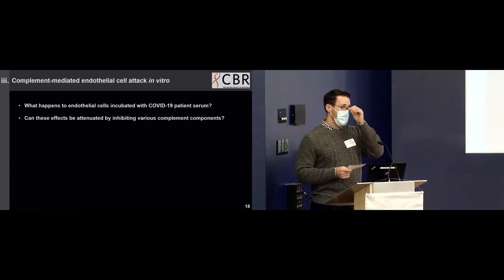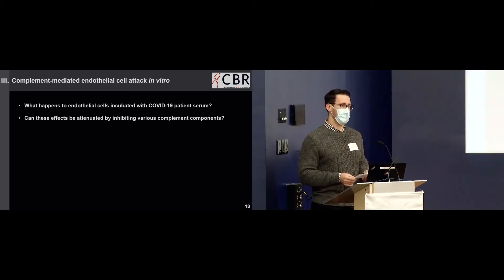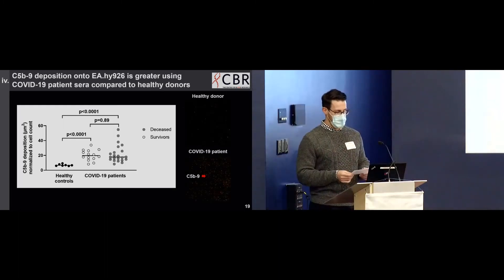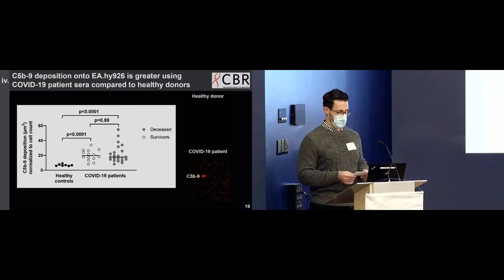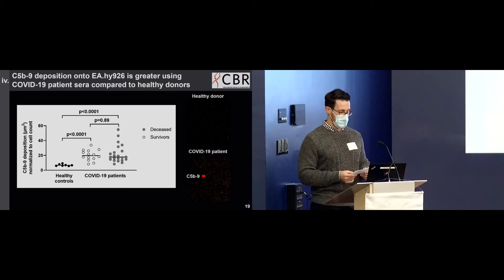Shifting gears to in vitro: what happens to endothelial cells incubated with serum from these patients, and can these effects be attenuated by inhibiting various complement components? We measured complement attack using a fluorescence-based antibody detection system for the C5B9 complex. Despite the activation of complement components in vivo, patients retain their complement activity, and some even deposit huge amounts of C5B9 onto endothelial cells — without sensitizing the cells to complement attack — suggesting something in the serum of COVID-19 patients enhances or dysregulates C5B9 formation.